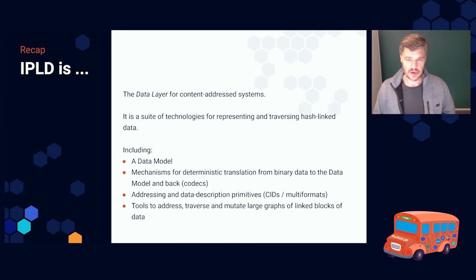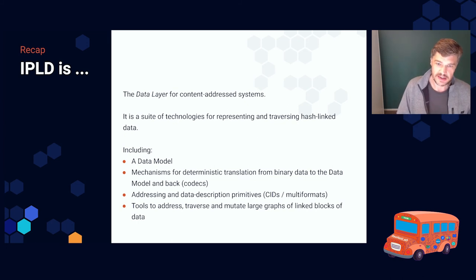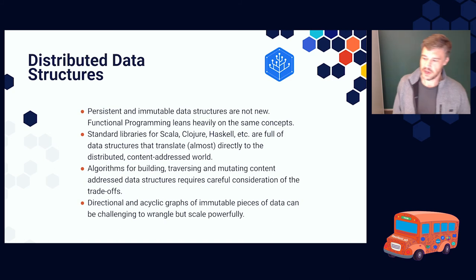We have mechanisms for deterministic translation from binary data to the data model and back. And the determinism matters in content address data because same content should ideally have the same hash. So you sort of want your content to always produce the same hash if possible. It includes addressing and data description primitives, which is this multi formats world and CIDs, but it also includes tools to address, traverse, and mutate large graphs of linked blocks of data. That's where we get really interesting into some distributed data structures, which we're going to look at next.